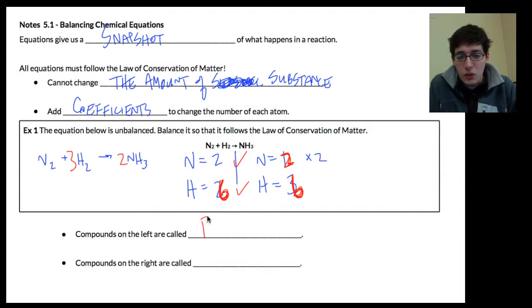Now, compounds on the left, again, these are called reactants. And the compounds on the right are called products.